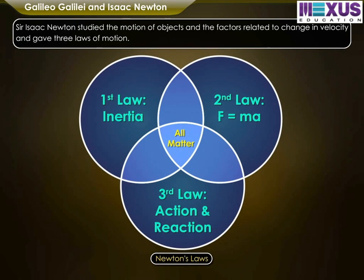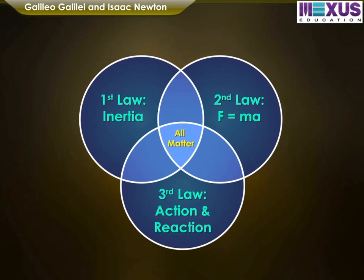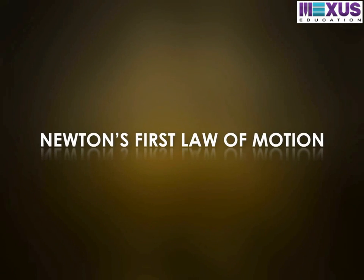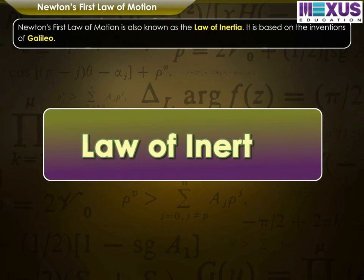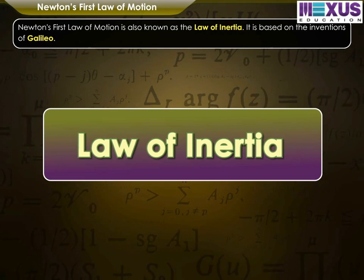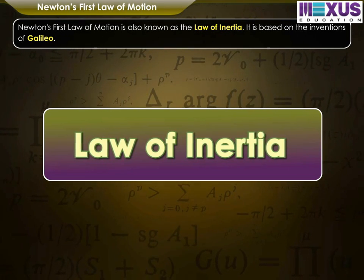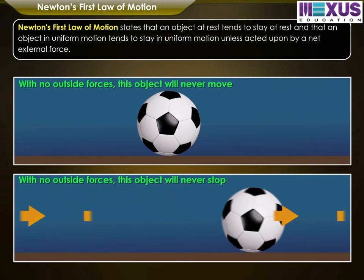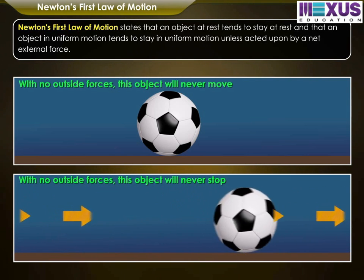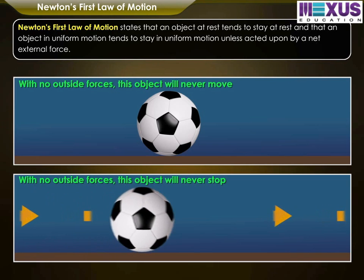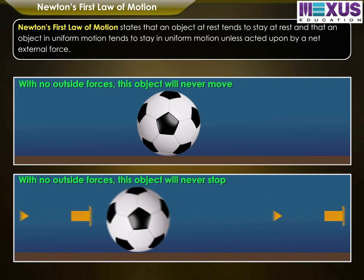Sir Isaac Newton studied the motion of objects and the factors related to change in velocity, and gave three laws of motion. Newton's First Law of Motion, also known as the Law of Inertia, is based on the inventions of Galileo. It states that an object at rest tends to stay at rest, and an object in uniform motion tends to stay in uniform motion unless acted upon by a net external force.